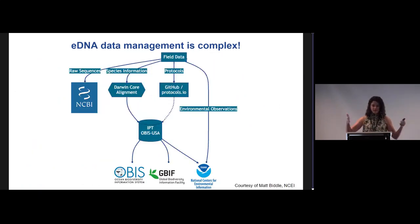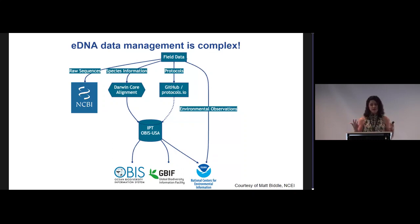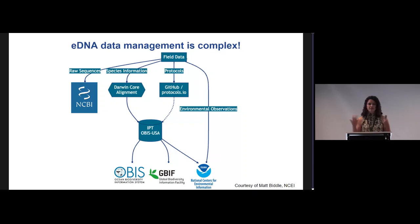In addition to the challenge of organizing all of that information to know the provenance of how you got to your eDNA occurrence, there are a lot of different places you're expected to put your data along the pipeline. In the United States, our raw sequences are deposited in NCBI. We'd then like to also put those ASVs and occurrences on OBIS and on GBIF. But we also have all of the environmental observations, some of which you can put on OBIS and GBIF, and requirements in the United States for where they'd like us to put environmental data.